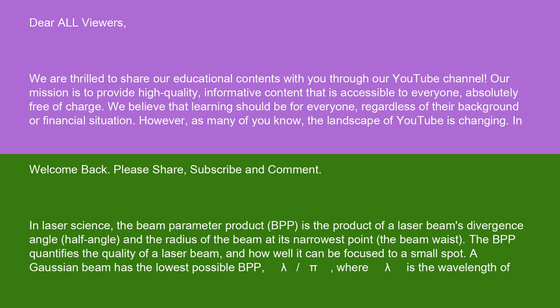Welcome back. Please share, subscribe, and comment. In laser science, the beam parameter product (BPP) is the product of a laser beam's divergence angle (half angle) and the radius of the beam at its narrowest point (the beam waist). The BPP quantifies the quality of a laser beam and how well it can be focused to a small spot. A Gaussian beam has the lowest possible BPP, lambda slash pi, where lambda is the wavelength of the light.